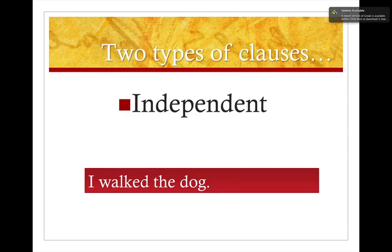An independent clause is in fact a sentence, like "I walked the dog," because it has a subject, a verb, and could stand alone by itself as a complete thought — a complete sentence. That's what's known as an independent clause, sometimes called a main clause. In our book it's called an independent clause.